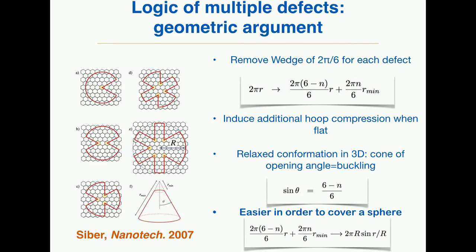More precisely, here you have one defect, then two, three, four, five. From a geometric argument, why is it favorable to have multiple defects in order to have less stress? Recall that by going from a disc to a sphere, the rim length was reduced. By including one defect, you remove a part of the rim, reducing its length. You can compute the length removed from the system in order to cover up the sphere by adding more defects. This length reduction makes it easier to follow the curvature of the sphere.